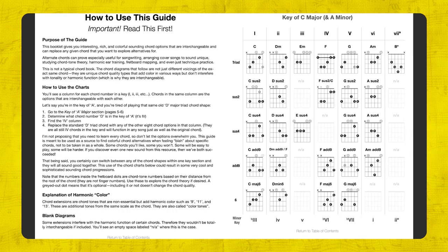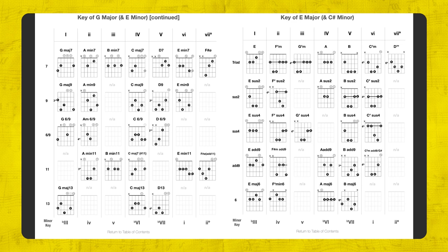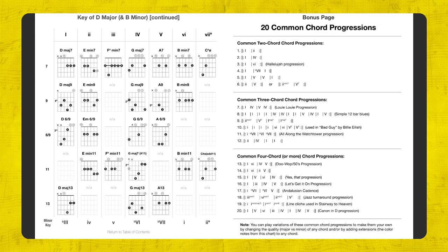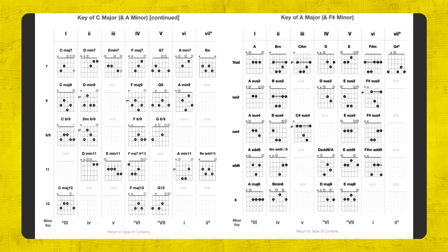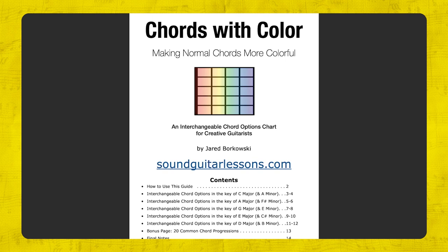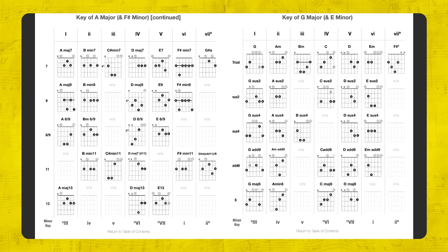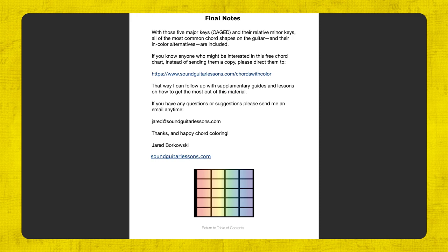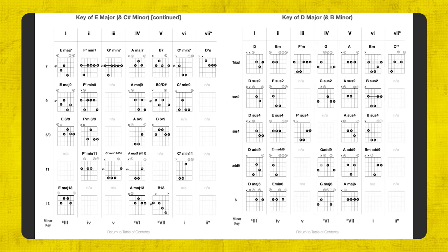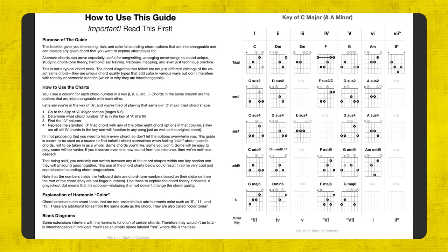If you want another resource for studying the fretboard, definitely grab my free chord chart called 'Chords with Color.' It shows a ton of awesome chord options with extensions and alternative interchangeable options for chords through five different keys, showing different chord shapes — sus4, sus2, add9, and every type of chord through five different keys — with all the theory information about what chords are within each key and chord tones labeled. It's a very cool chord chart and it's free — there's a link in the description.